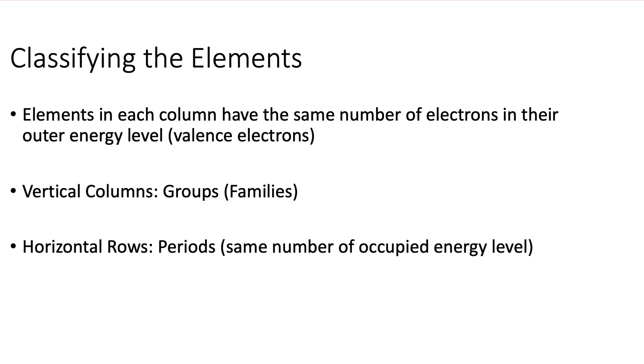Elements in each column have the same number of electrons in their outer energy level. That's a valence electron. And to calculate the number of valence electrons, all you have to look at is the group number. And when I mean group, I mean the A group.